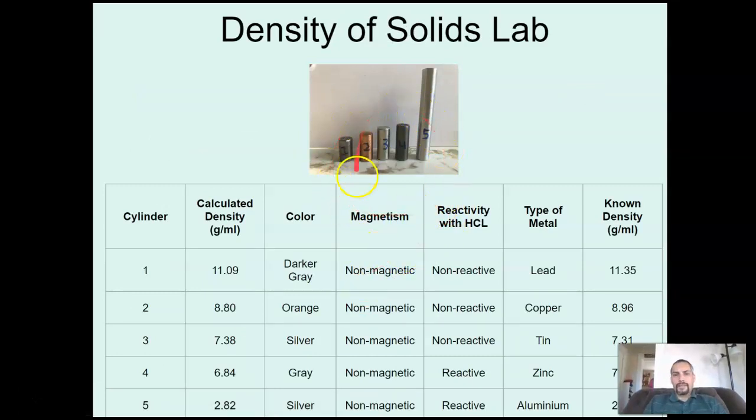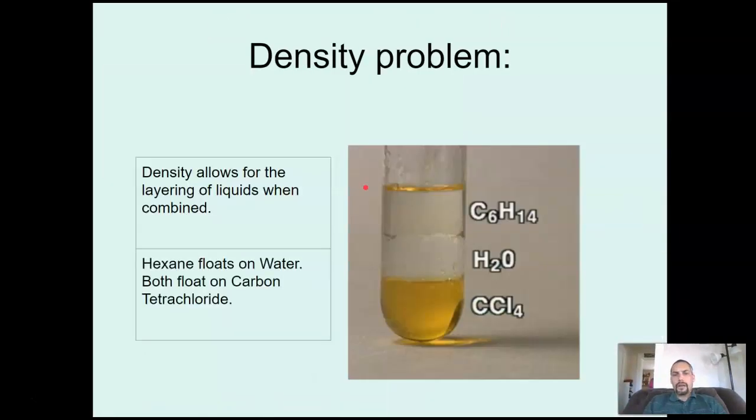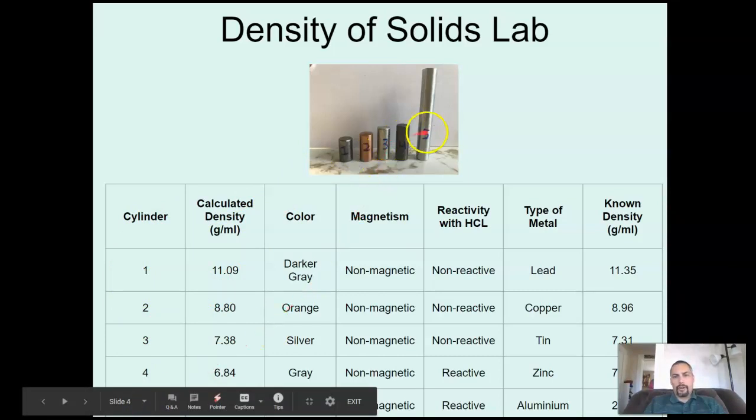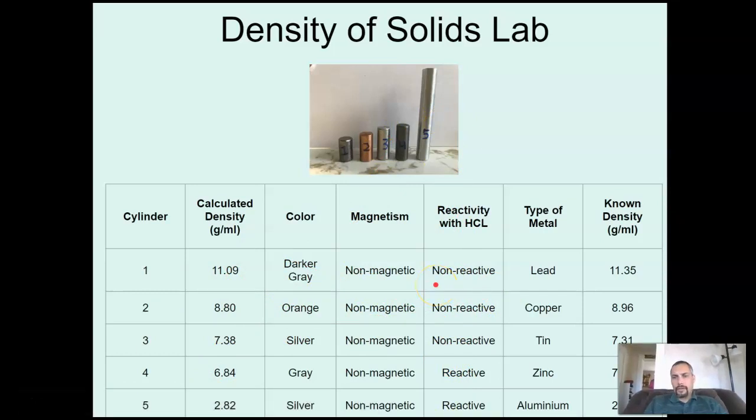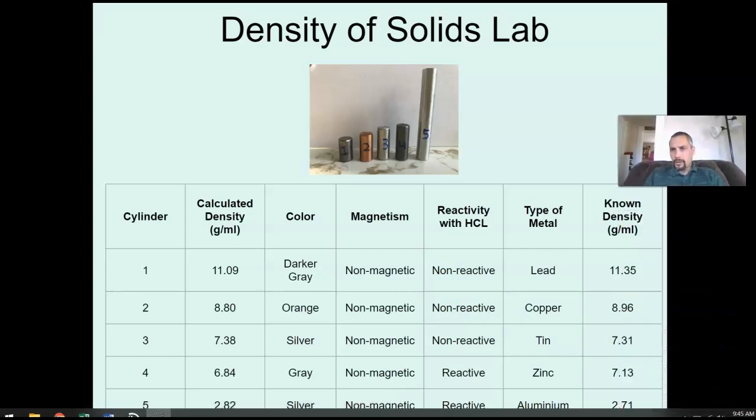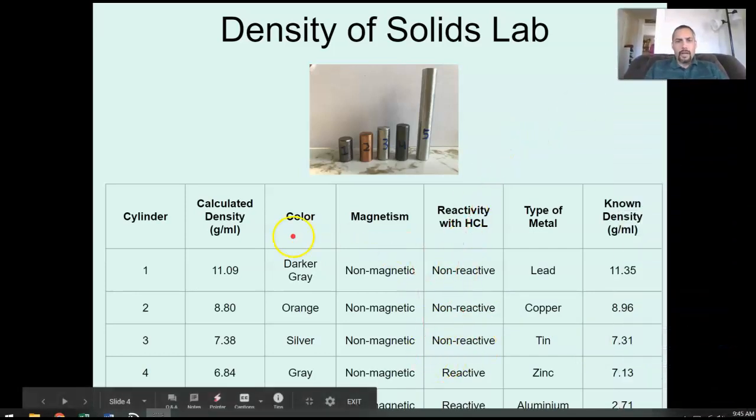Real quickly, if we think back to this density of solids lab we did. Remember when we used these five different cylinders and we looked at these? A couple of quick things. So cylinder number one was our shortest. Cylinder number five was our longest. So here's a little table of sort of the results we got from that. Let me move my picture up here out of the way so that you can see a little better.